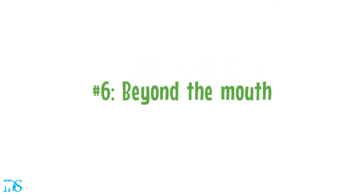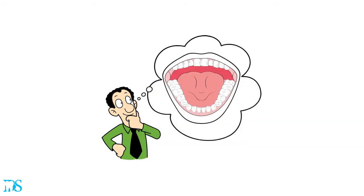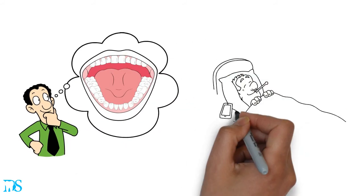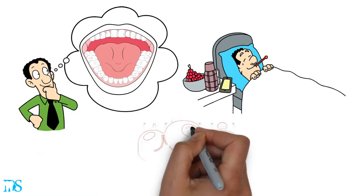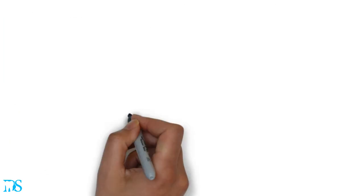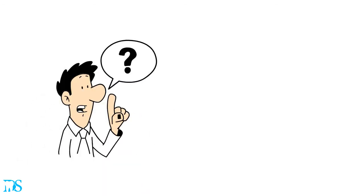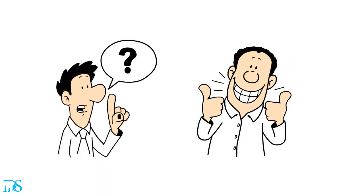Risk number six of avoiding the dentist goes beyond the mouth. If you thought neglecting your dental appointment would only affect your mouth, you were wrong. What affects your mouth affects the rest of your body. Gum disease has been linked to diabetes, heart disease, stroke, premature birth, and even Alzheimer's. Although there's no evidence that one actually causes the other, they are correlated, so don't ignore your teeth.